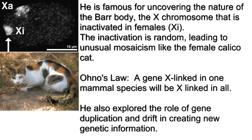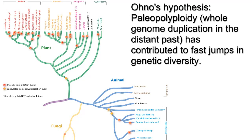He also explored the role of gene duplication and drift in creating new genetic information and evolution. His most controversial work — and it says something that we are still debating it — is called the 2R hypothesis, or Ohno's hypothesis. It states that at some point in the distant lineage of modern organisms, duplications of entire genomes, called polyploidizations, occurred and resulted in large jumps in genetic information. These duplicated chromosomes contained thousands of genes, and once duplicated, they became less constrained by natural selection. This allowed for a phenomenon called neofunctionalization, which means they were allowed to mutate a bit more and result in new phenotypes.